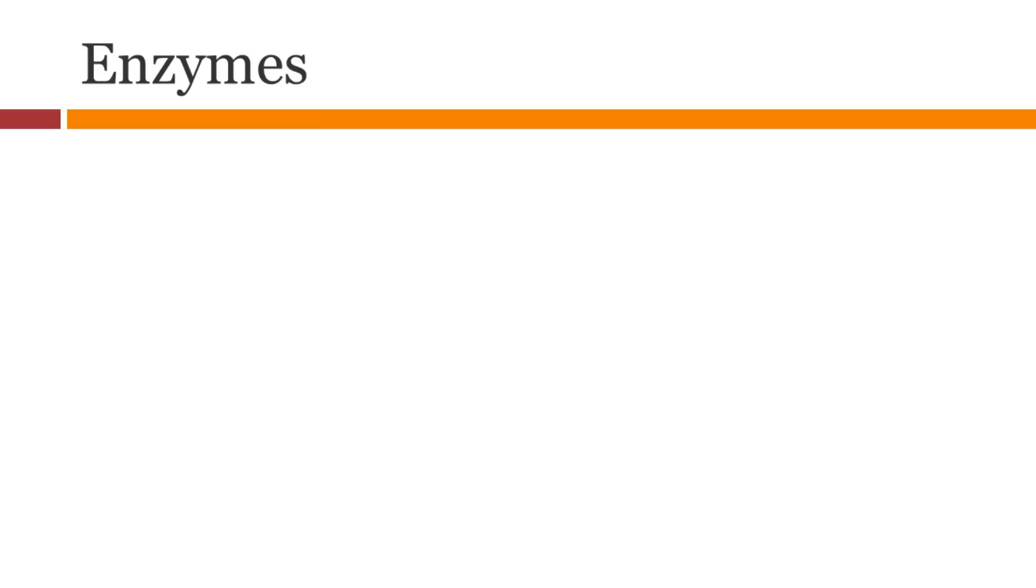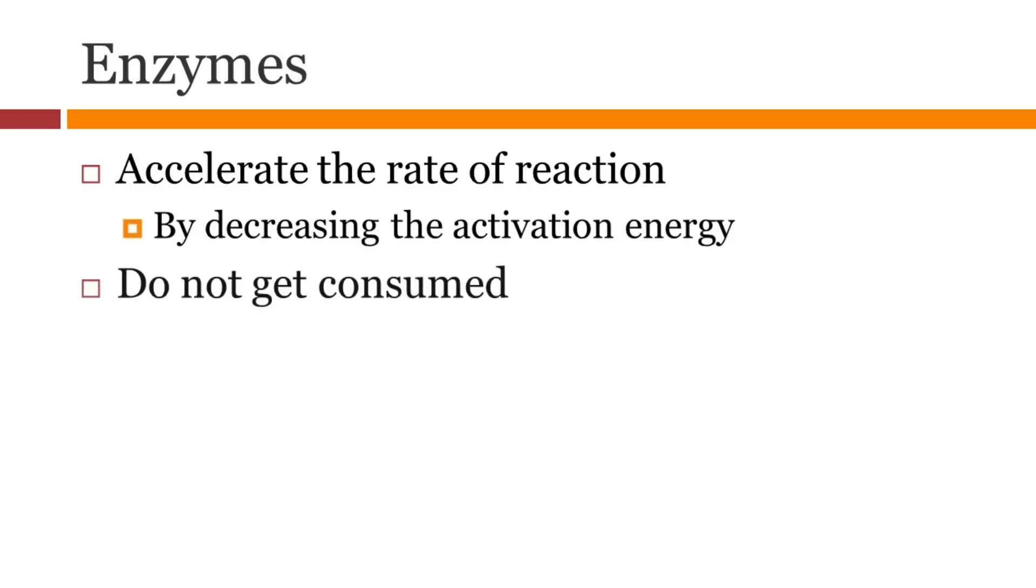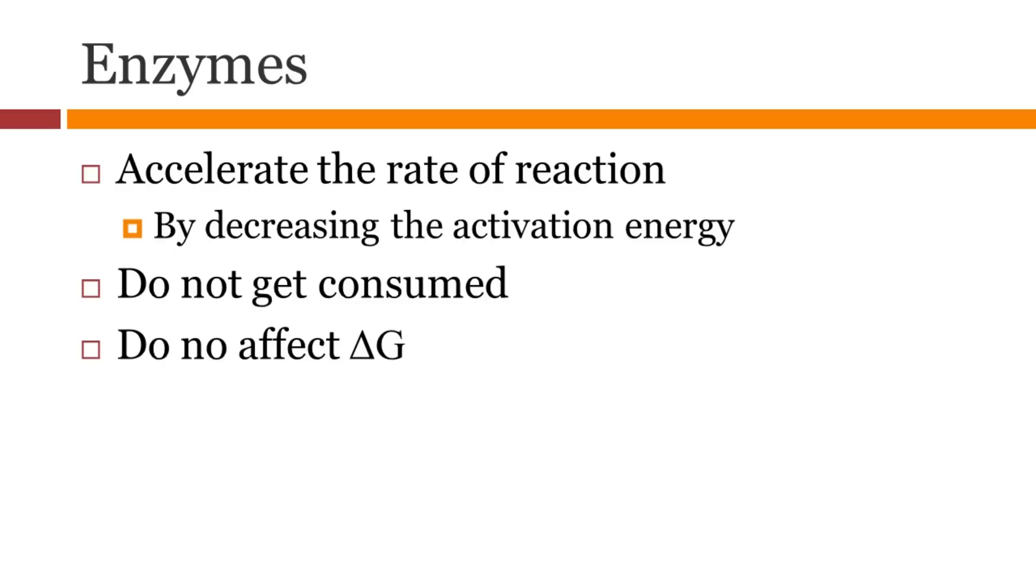Enzymes, as you know, accelerate the rate of reaction by stabilizing the transition state, thus decreasing the activation energy of a reaction. They do not get consumed and do not affect the delta G of the reaction. Do remember that enzymes cannot drive endergonic reactions.